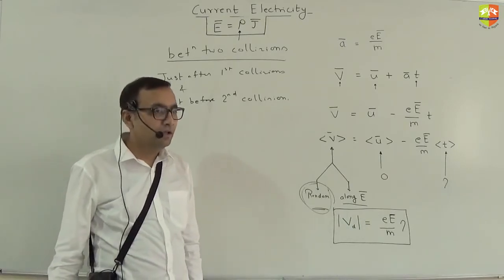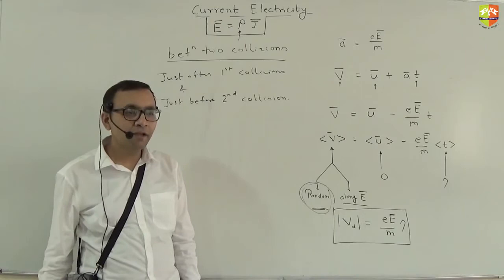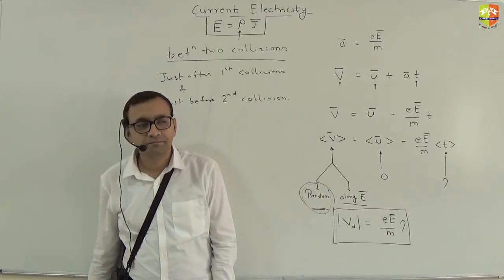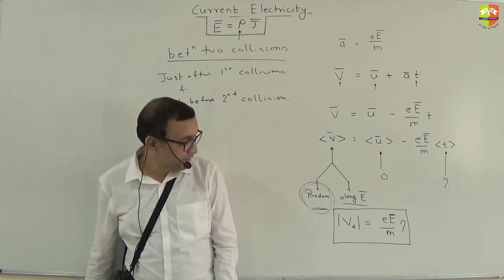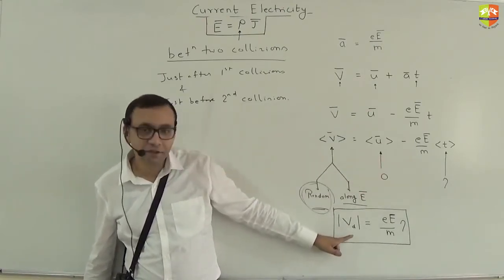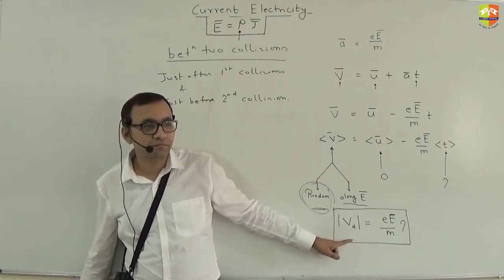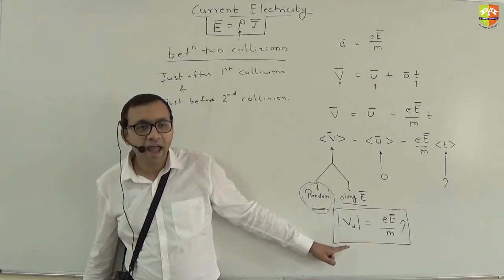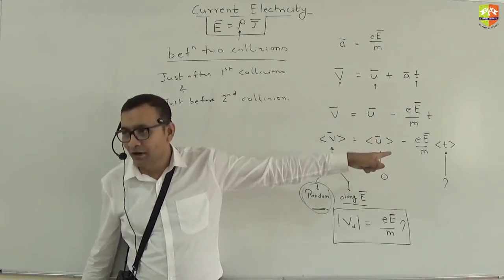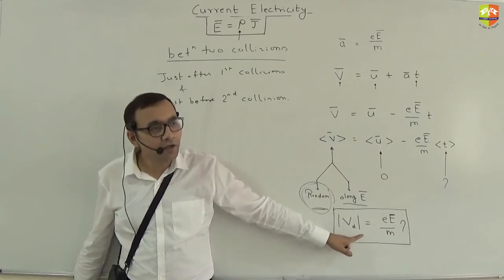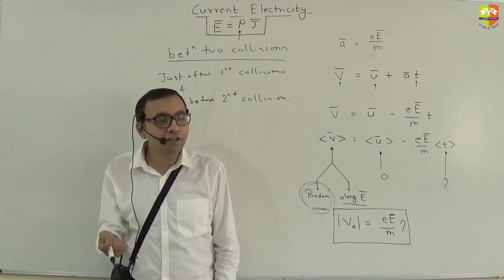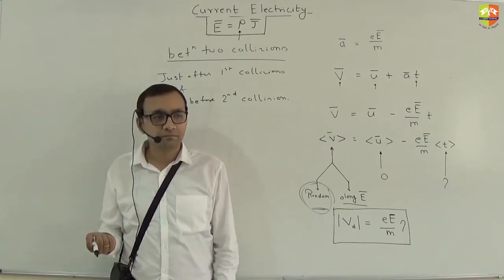Taking only magnitudes, since the direction is clear: drift velocity = (eE/m) × τ, where E is the magnitude of the electric field, m is the electron mass, and τ is the average time between collisions. There is something remarkable here: there is a force and an acceleration, yet the drift velocity comes out to be constant. This happens because of our assumption — after every collision, the velocity becomes random, effectively resetting the directed motion.